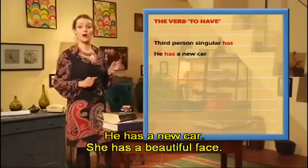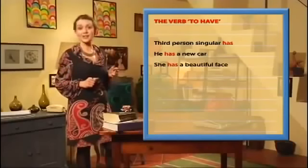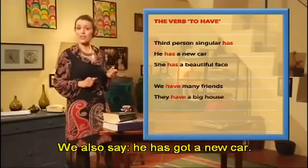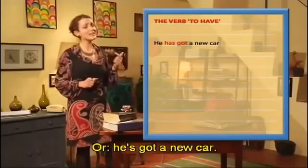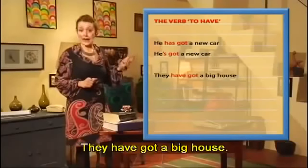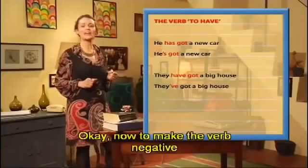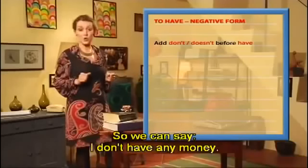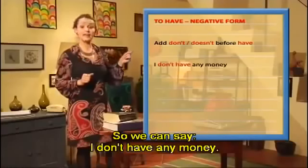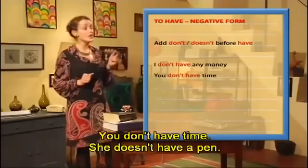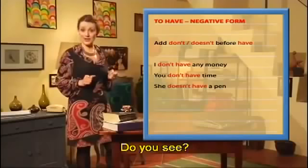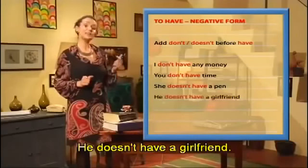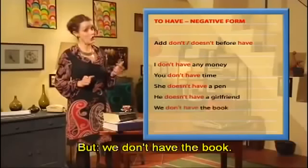He has a new car. She has a beautiful face. We have many friends. They have a big house. We also say he has got a new car, or he's got a new car. They have got a big house, or they've got a big house. Now, to make the verb negative, we simply add don't or doesn't before have. I don't have any money. You don't have time. She doesn't have a pen.